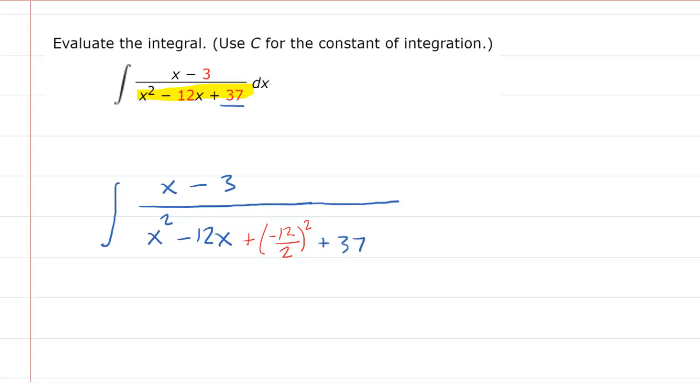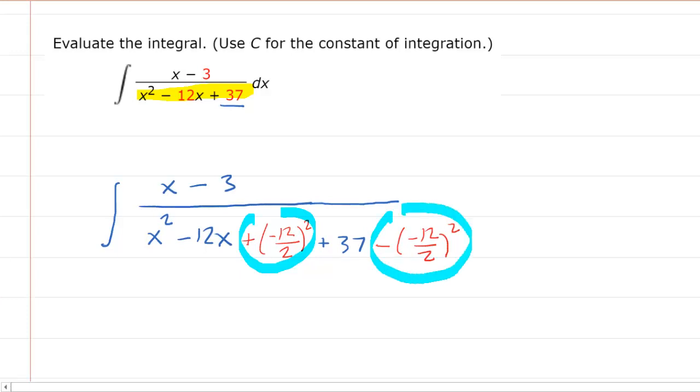Then you can put on your plus 37. But then be careful, because if you decide to add a constant into the denominator, then you better make sure you also subtract that same constant in order to maintain the original expression. You do not want to completely add a new constant because that would change the problem. So just make sure that you include that subtraction of that new constant as well.